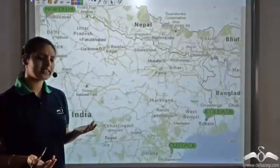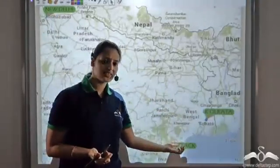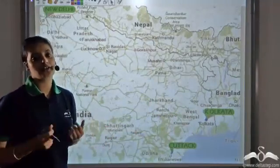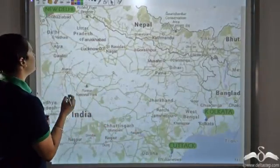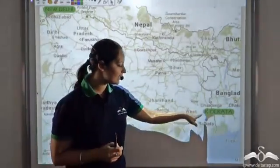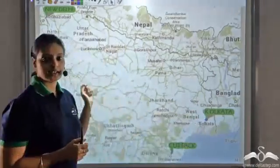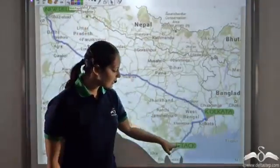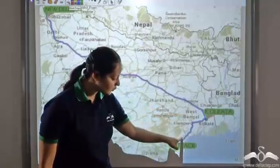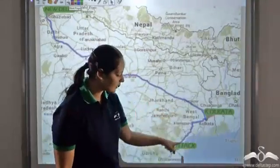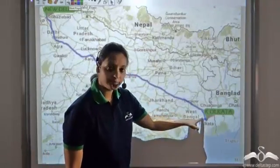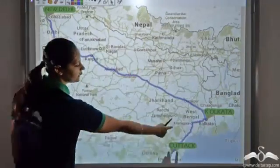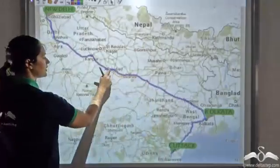So how do we actually say that things or places are near or far? What do these terms near or far actually indicate? To understand this, we need to look at the length of the route which is taken. The length of the route from Kolkata to Katak is small, whereas the route from Kolkata to New Delhi is pretty long.